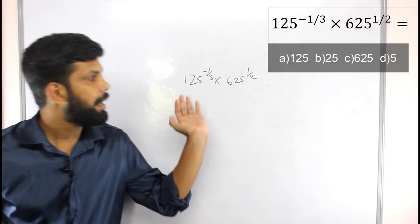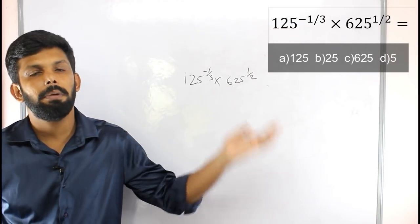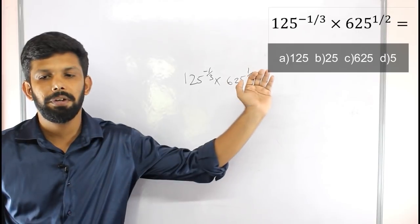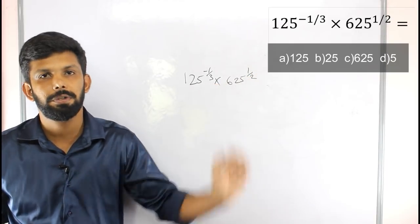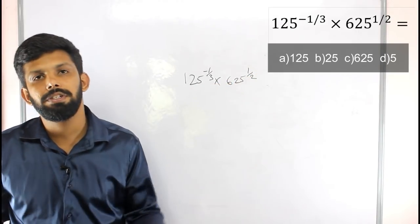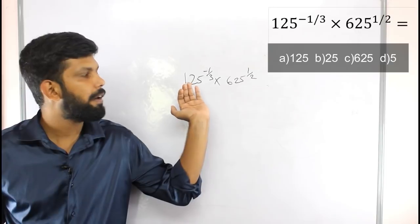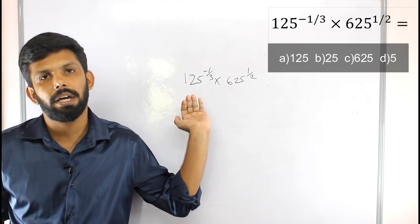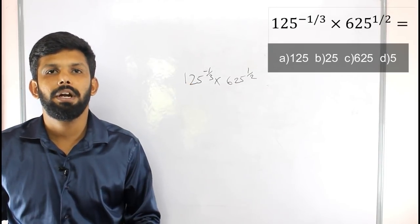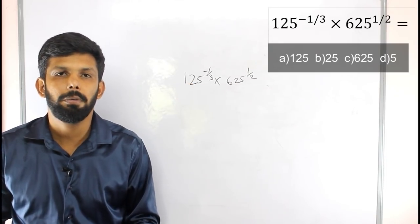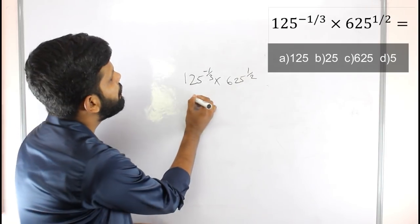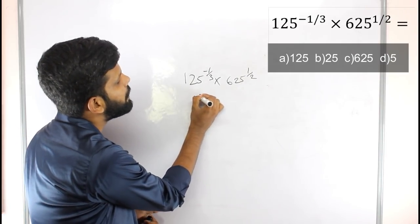If you have two numbers — multiple numbers — in the options: 125, 25, 625, 5. We say that 125 is 5 into cube, i.e., 5 cubed. So here we deal with powers of 5: 125 is 5 cubed, and 625 is 5 to the 4th power.